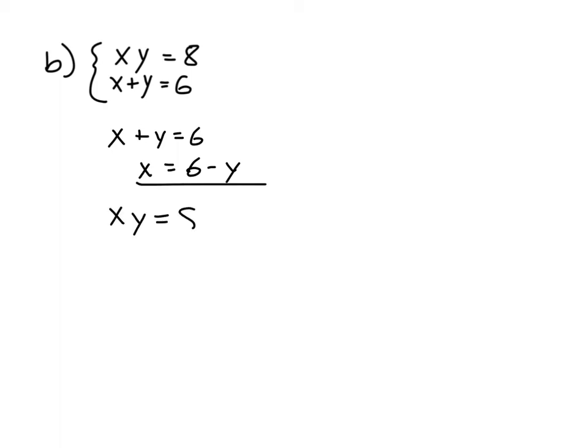And then I'm going to plug this in. So I have x. The first equation says x times y equals 8. So let's go ahead and plug in 6 minus y for x. Let's distribute the y. So I'll have 6y minus y squared. Distribute the y. That's basically what I did.